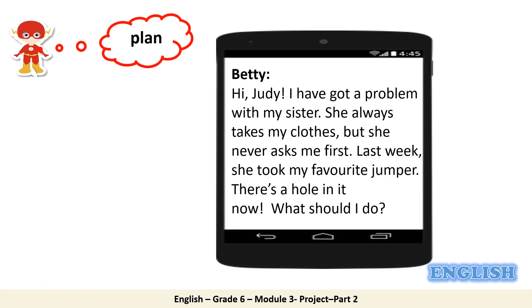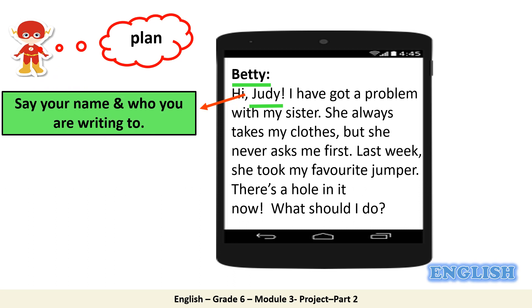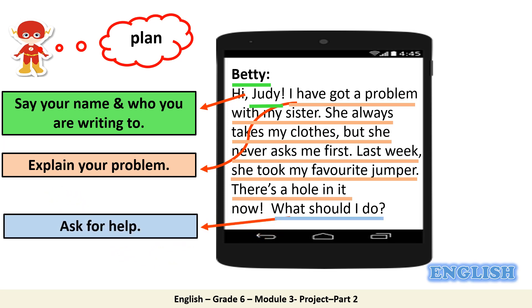Let's brainstorm ideas about the most important parts of a text message in which you're asking your friend for help. First, you say your name and who you are writing to. Then, you explain your problem. After that, you ask for help.